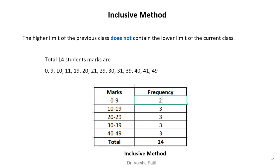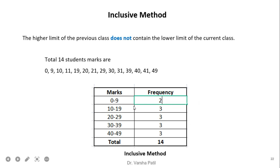Inclusive method: the upper limit of the previous class does not overlap with the lower limit of the current class. For example, if the upper limit of the previous class is 9, the next class starts with 10. The difference is that the upper limit of one class is not the lower limit of the next — it starts fresh. For the same example, we draw a table of marks and frequency using this inclusive method.